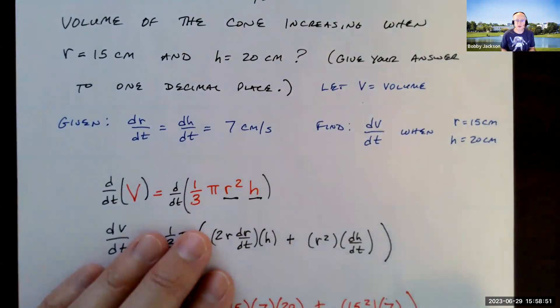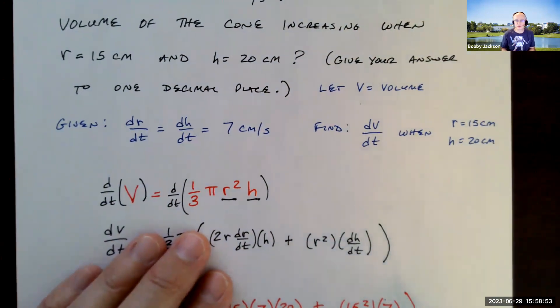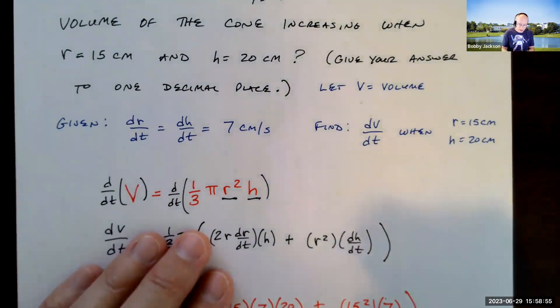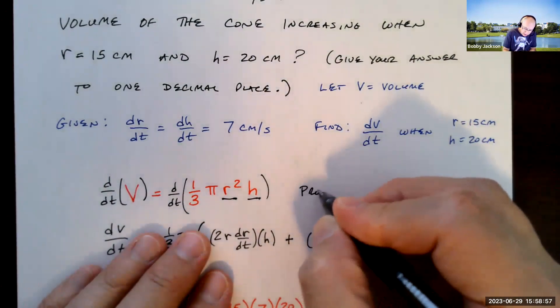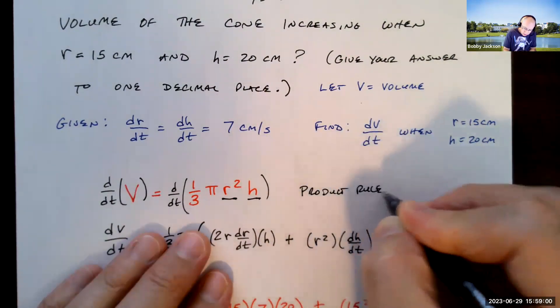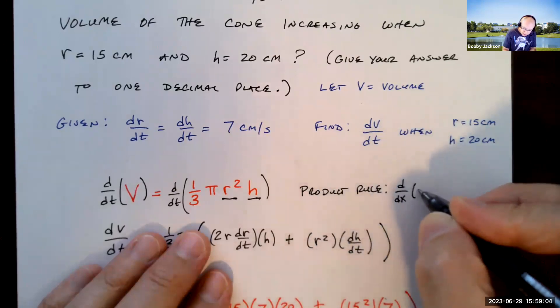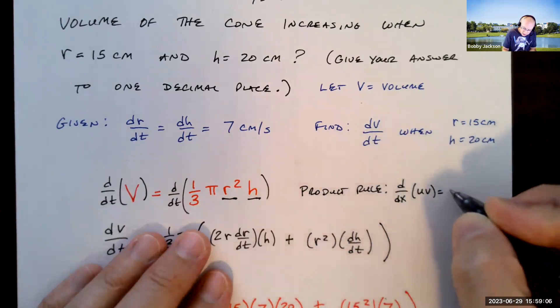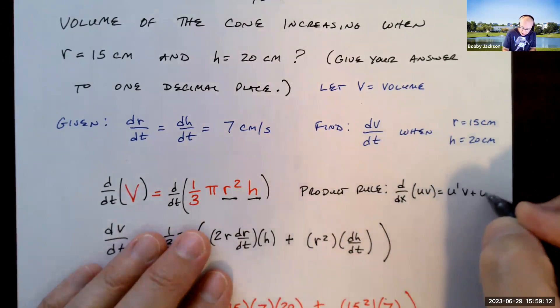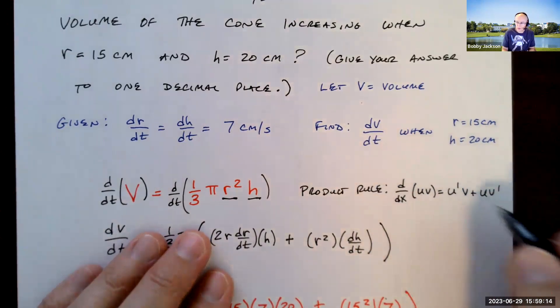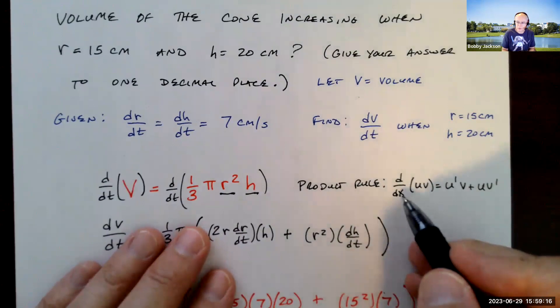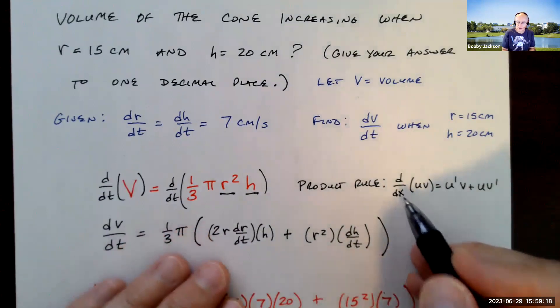R is a function of time. H is a function of time. What rule do we have to use there? We have to use the product rule. The derivative with respect to x of u times v is u prime v plus u v prime. The prime marks means the derivative with respect to x. Okay, so that's what we're going to use.